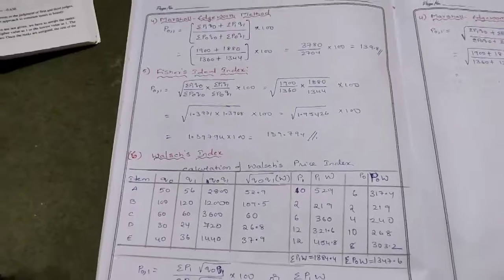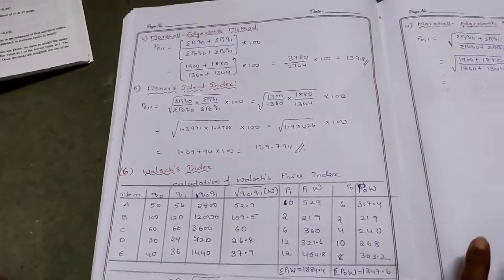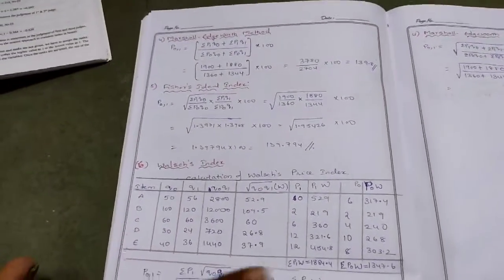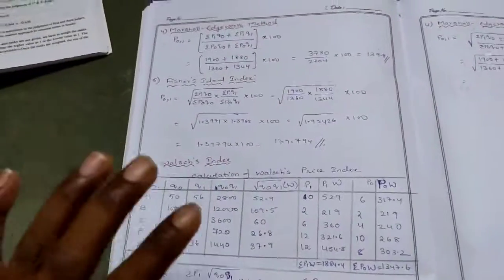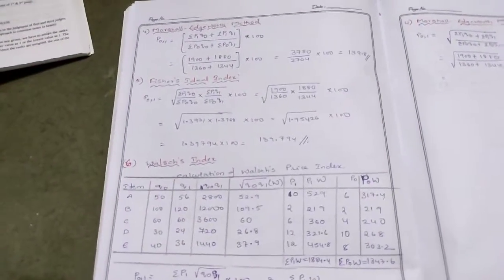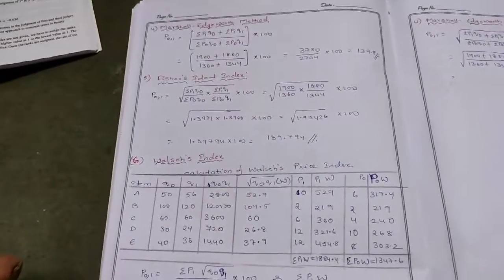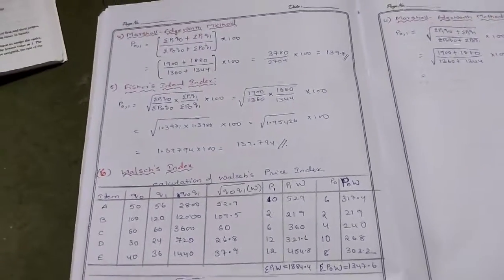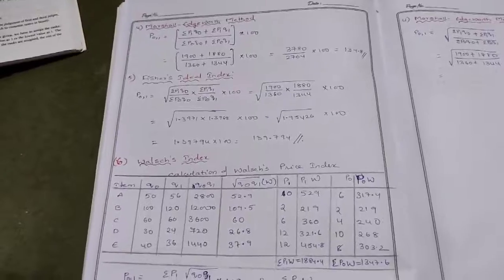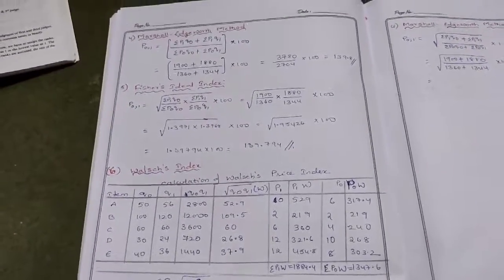So these are the weighted aggregative index numbers — very, very important. Mainly 6 methods; Kelly's is not necessary but there are 7 total. Please maintain your notes. Thank you.